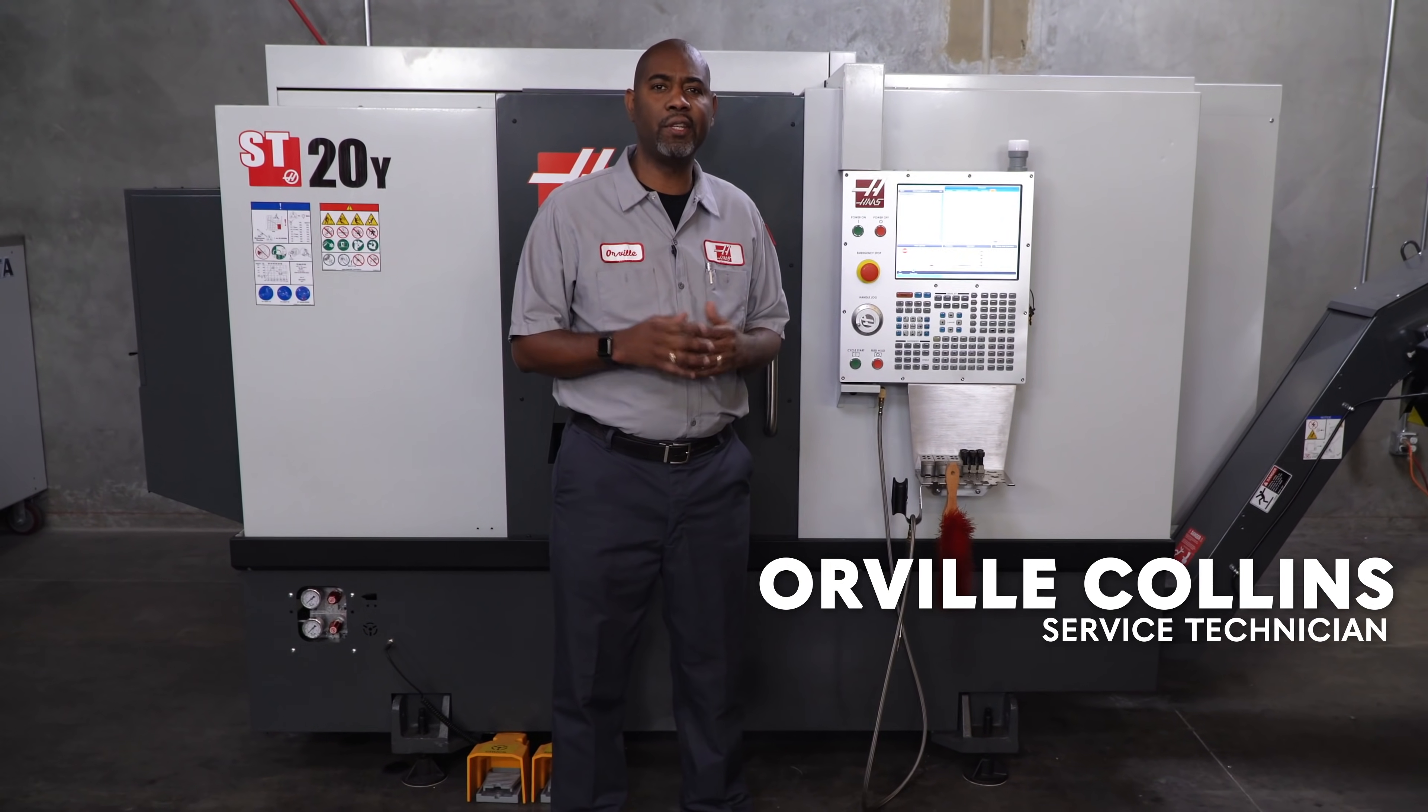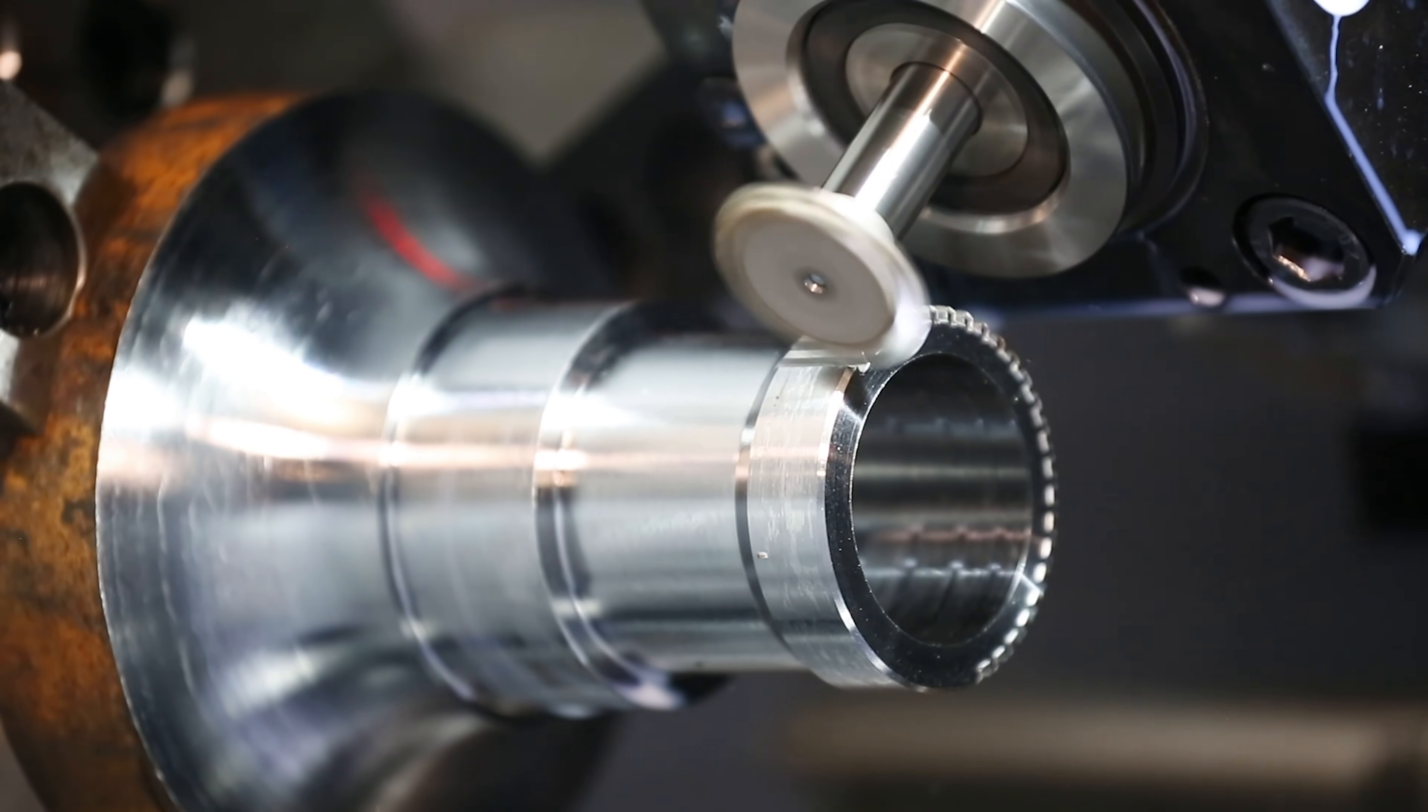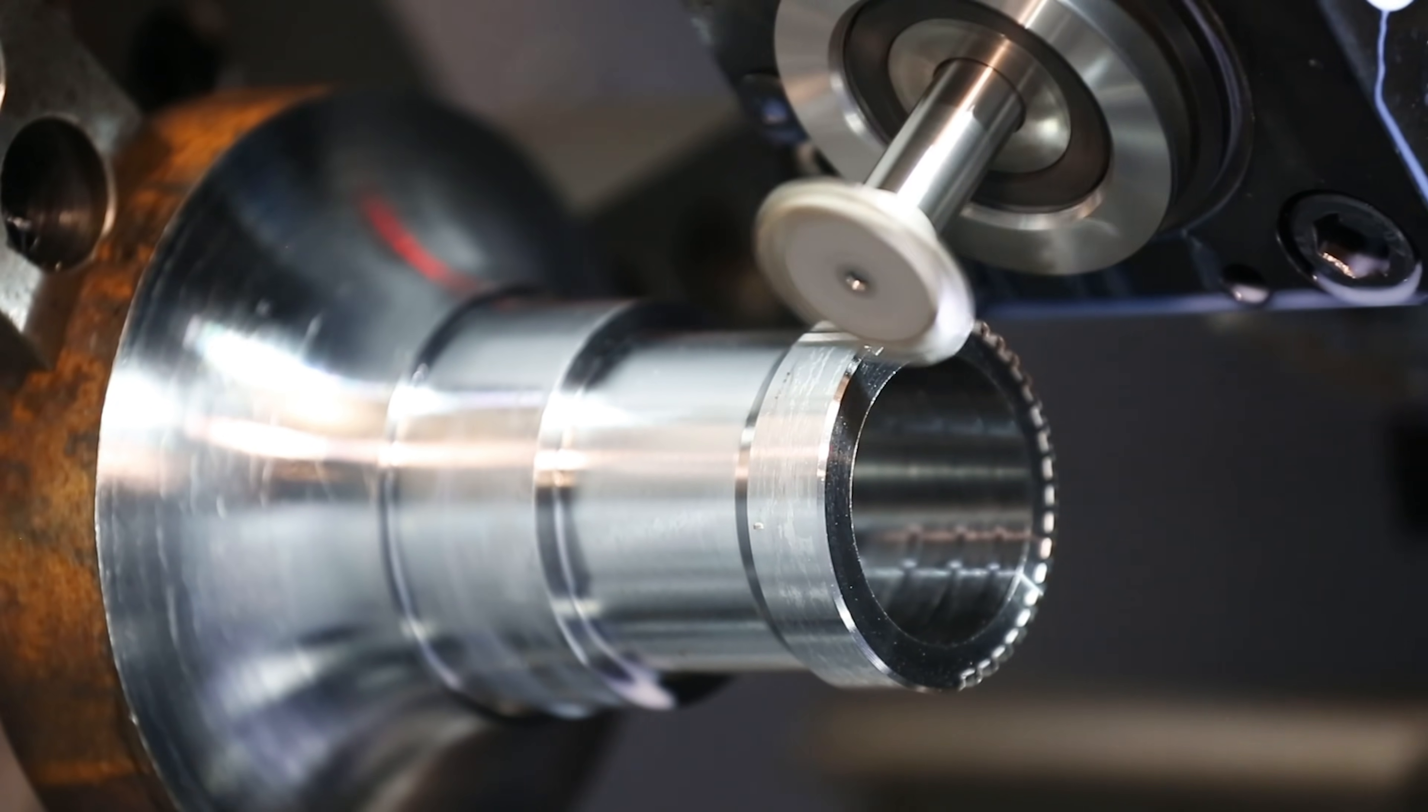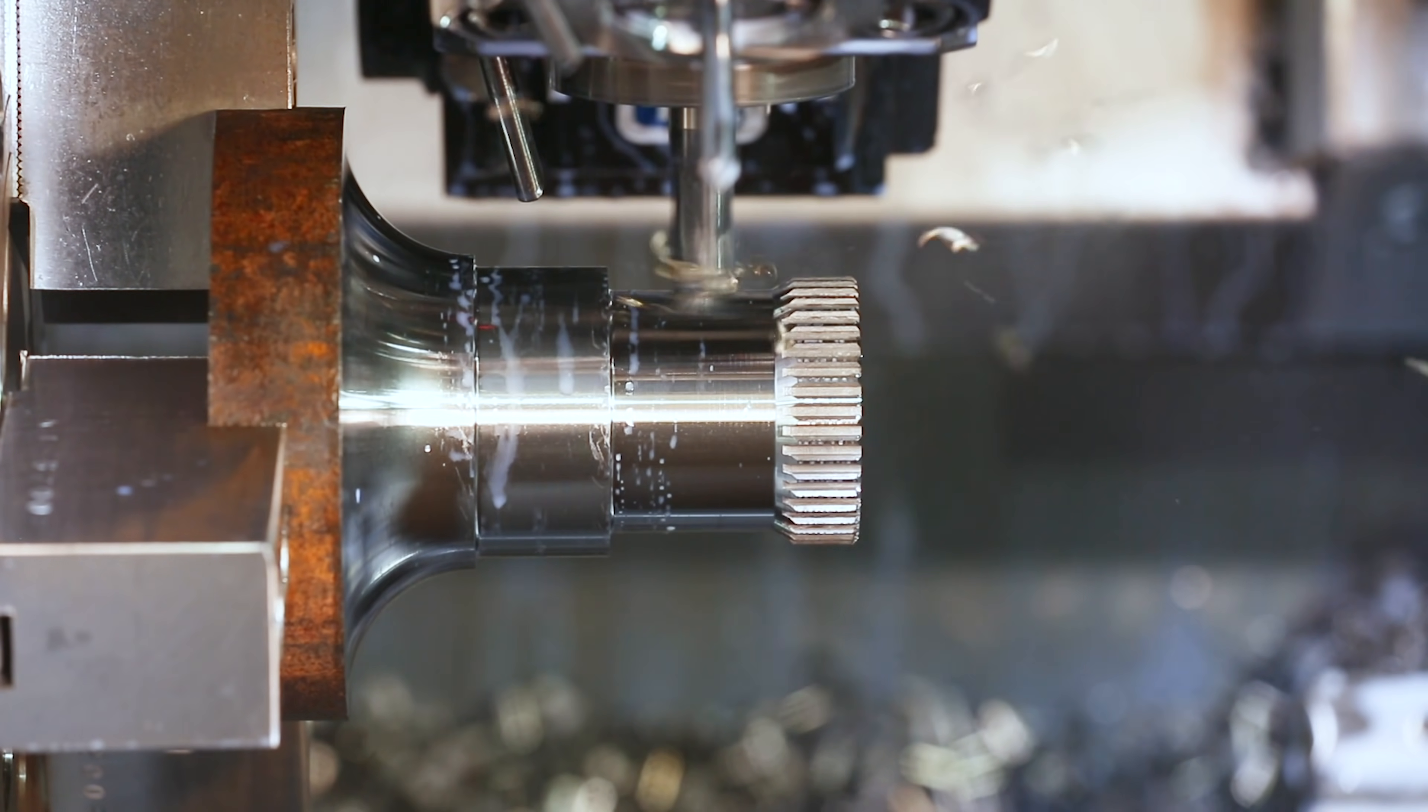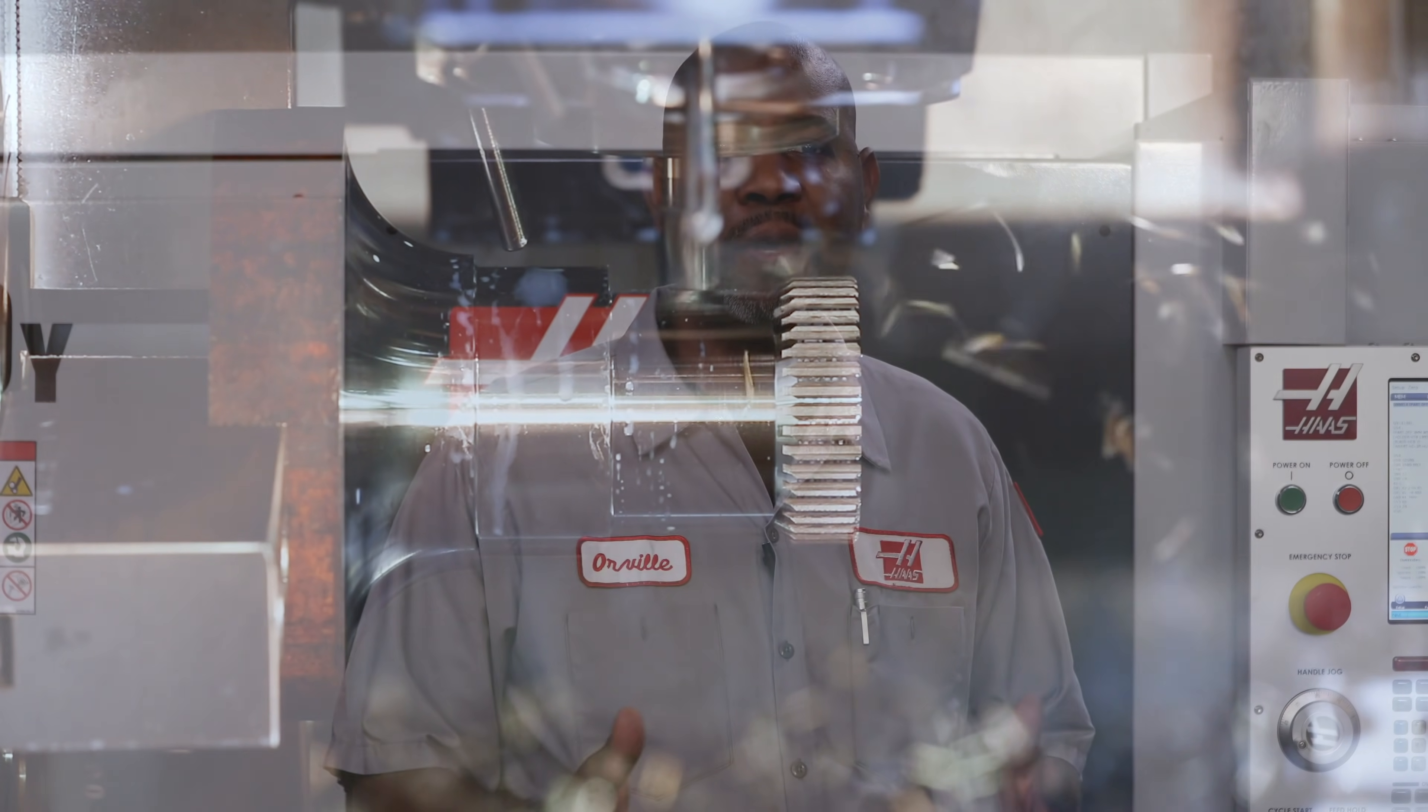Today we're going to take a look at leveling your turning center. This is the basis from which the machine maintains its geometry, accuracy, and ability to produce good finishes. If it's been a while since the level was checked on your machine, we're going to show you how to get it done, so stick around.